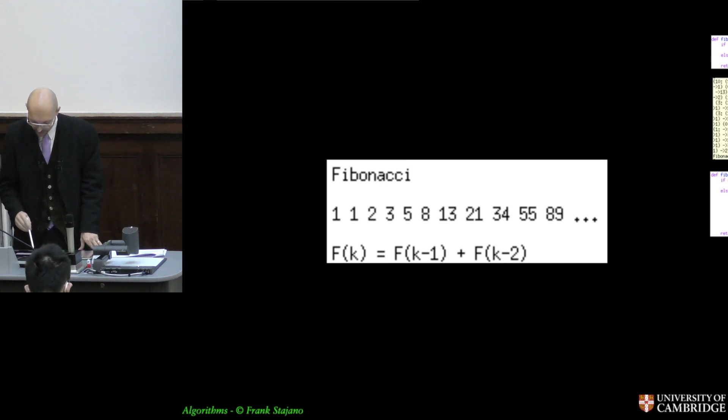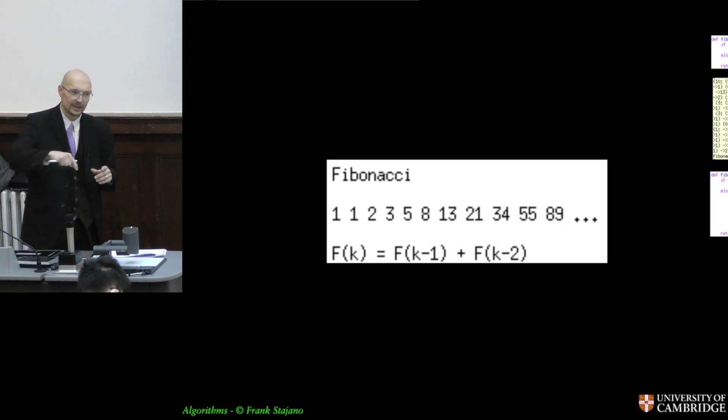So you are familiar with the well-known Fibonacci sequence, where starting with one and one, you add them together and you get two. You add the last two numbers together, you get three. You add the last two numbers together, you get five. You add the last two, and you get the next one. You add the last two numbers together to get the next one.